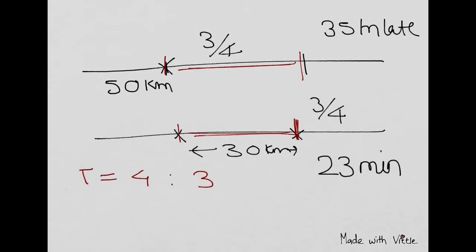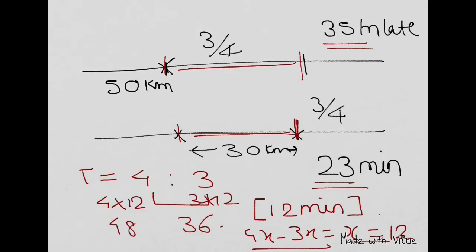If you see the time difference, it was 35 minutes late minus 23 minutes, so you got the difference 12 minutes. If you see the ratio of time was 4 is to 3.